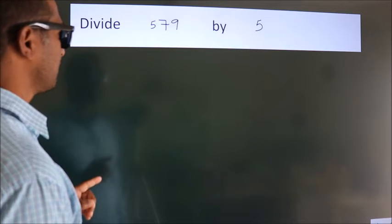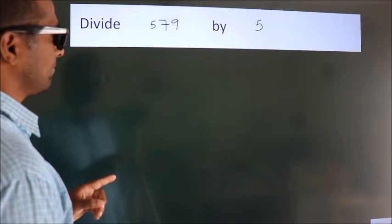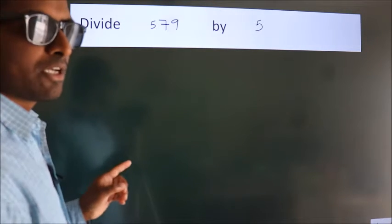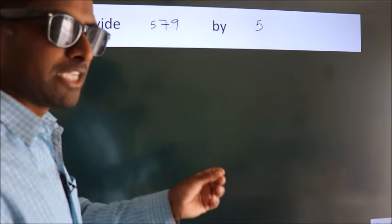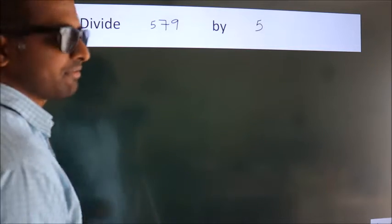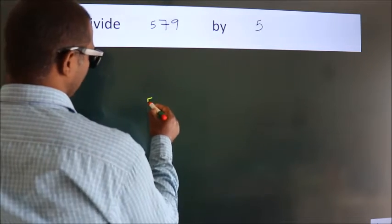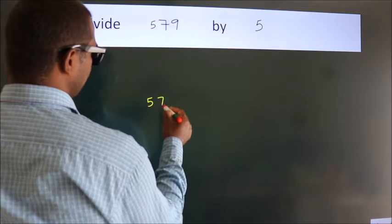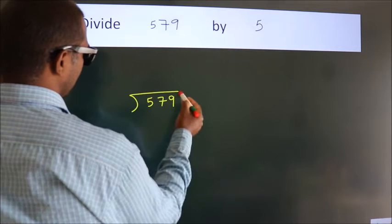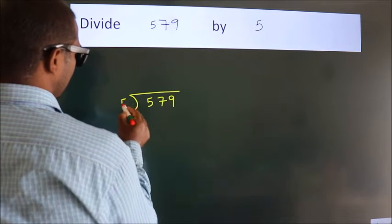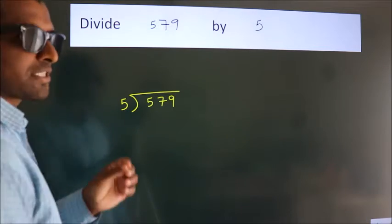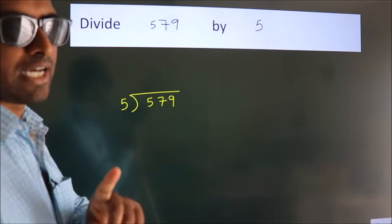Divide 579 by 5. To do this division, we should frame it in this way: 579 here, 5 here. This is your step 1.